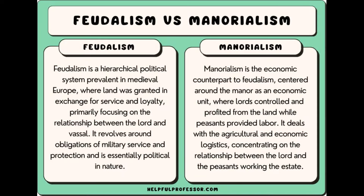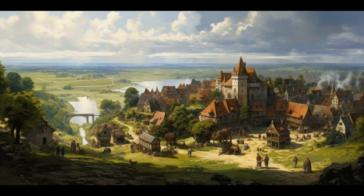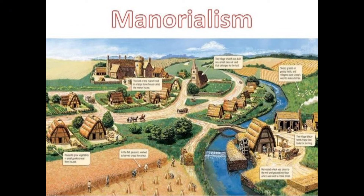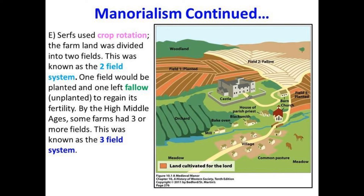Manorialism was another essential aspect of the feudal system. Manors were self-sufficient agricultural estates owned by lords. Peasants, known as serfs, worked the land in exchange for protection and the right to live on the estate. They were bound to the land and owed various obligations to the lord, including labor and taxes.